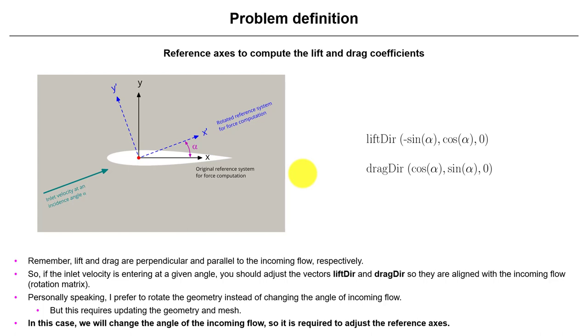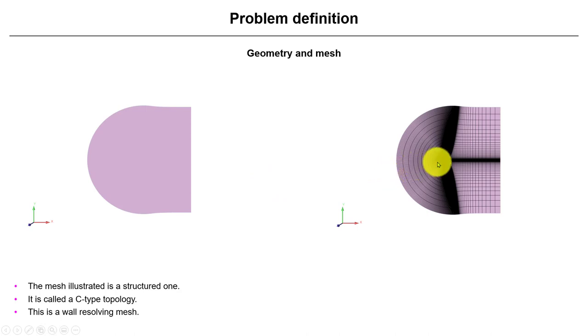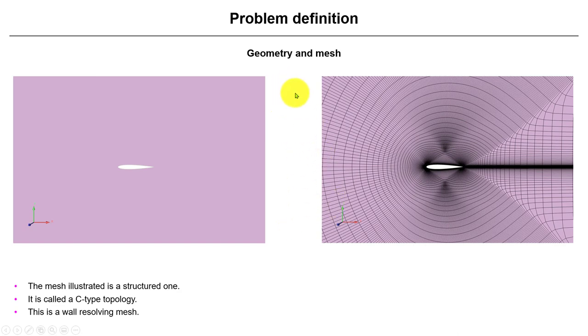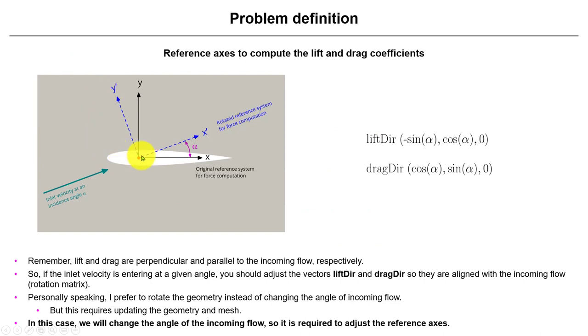Something important that you should have in mind also when you set up this case for different angles of incidence: what you can do, you can change the angle of the airfoil and the inflow is always parallel to the X axis. So that there is no problem there, or you can leave the airfoil fixed in one position and then you change the direction of the incoming flow.